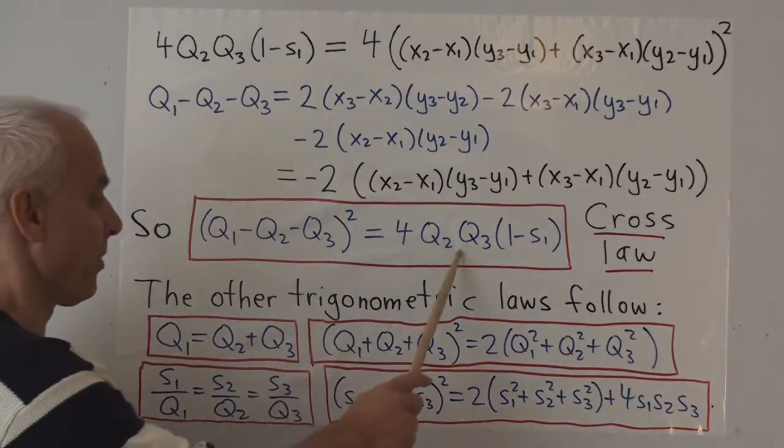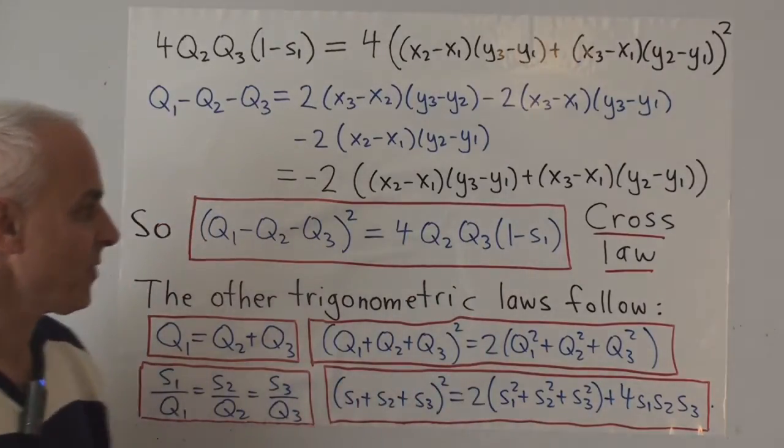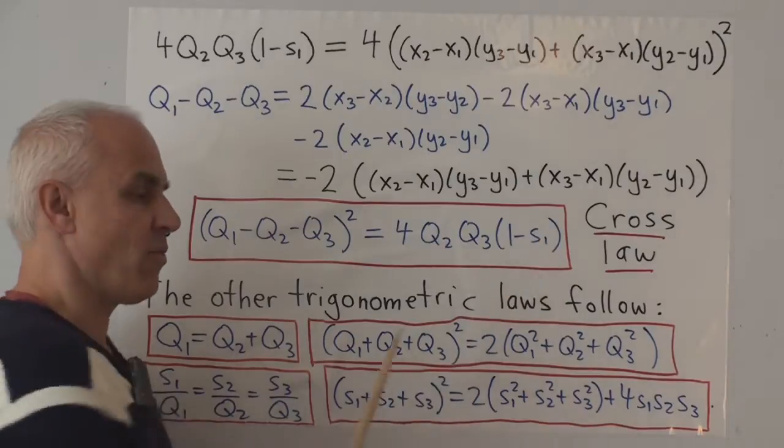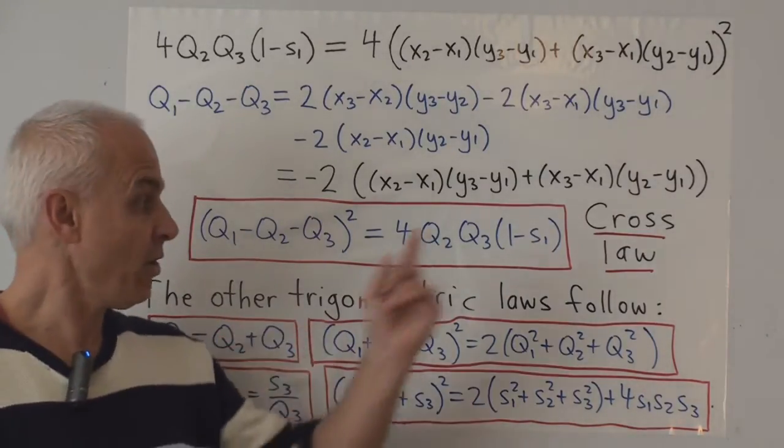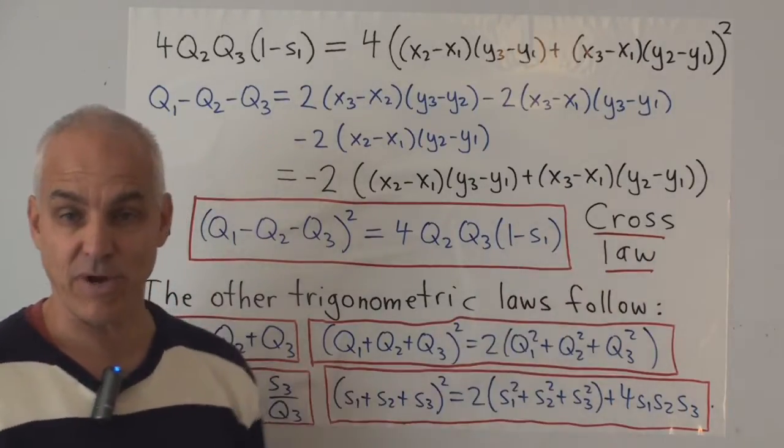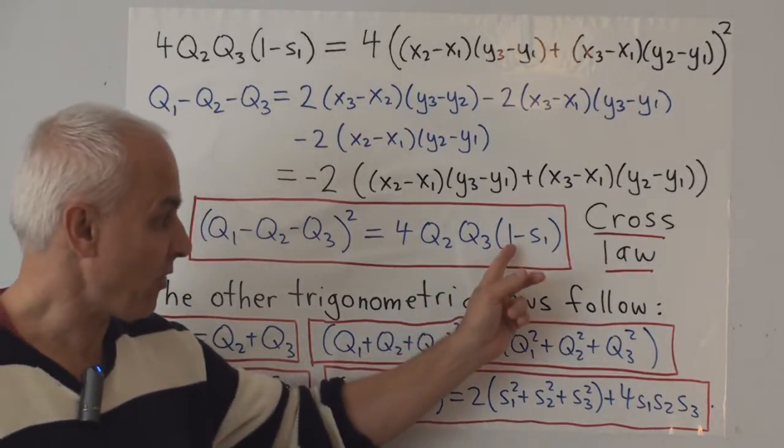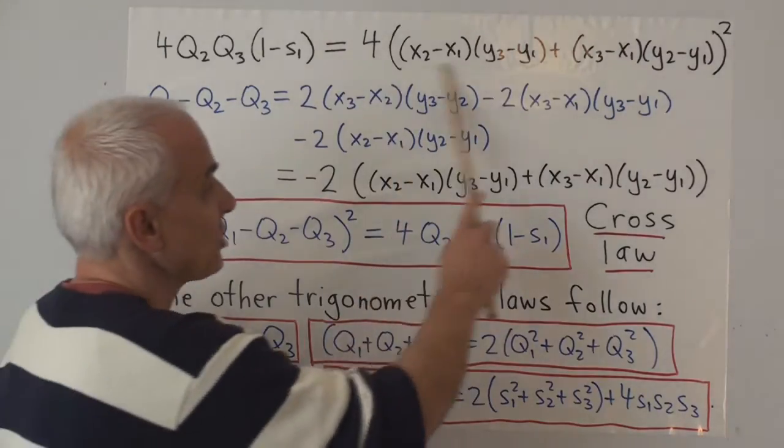Here is the cross law that we're trying to establish. And let's start with the right-hand side first, which has a factor 1 minus S1. That's very convenient because in our last video, we defined S1 in terms of 1 minus another expression. So we really already have an expression for 1 minus S1. It is this quantity here.